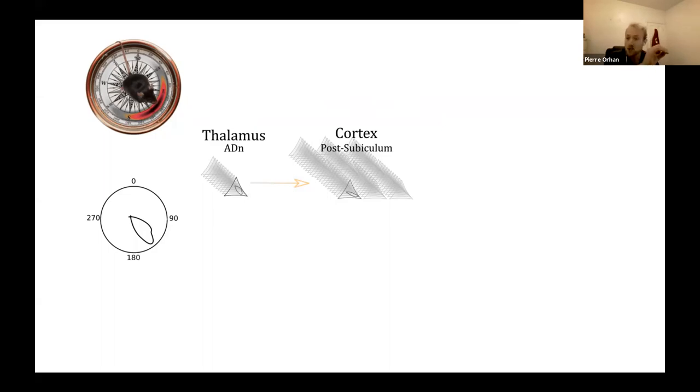And we can assess the tuning of each neuron with a tuning curve here on your left. The firing rate of each neuron is plotted as a function of the head angle. We observe such tuning in the thalamus, in the anterodorsal nuclei. This excitatory cell, which presents this tuning, projects toward the cortex in the postsubiculum. There we still observe excitatory neurons with similar tunings.